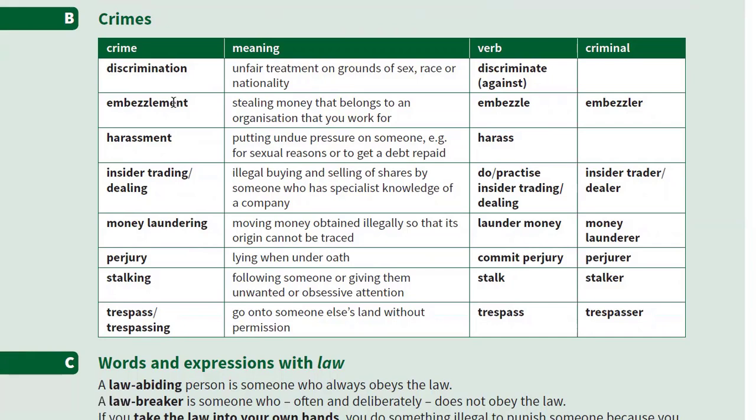The first word is 'discrimination' — a very common word. It means unfair treatment on grounds of sex, race, or nationality. People discriminate on different grounds. The verb is 'discriminate' and it collocates with 'against' — to discriminate against someone. The next word is 'embezzlement.'